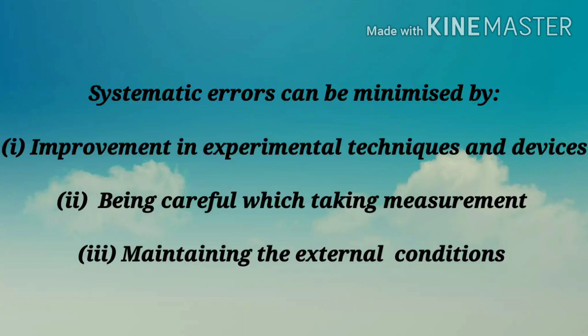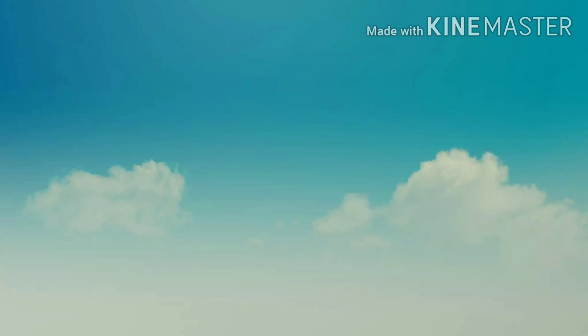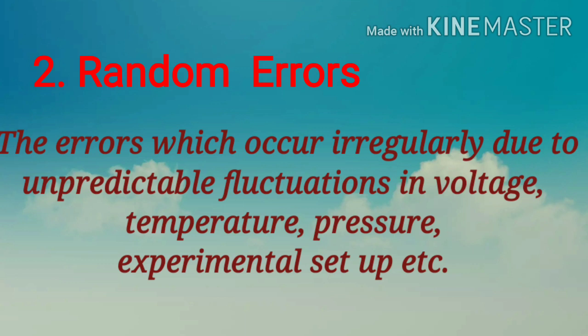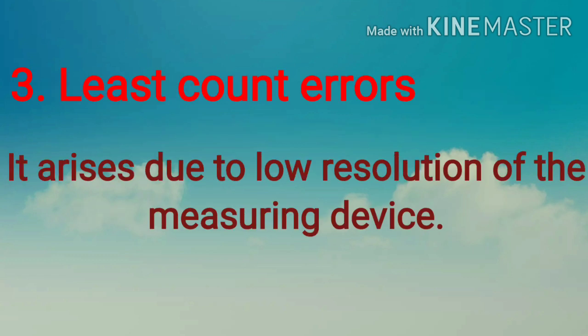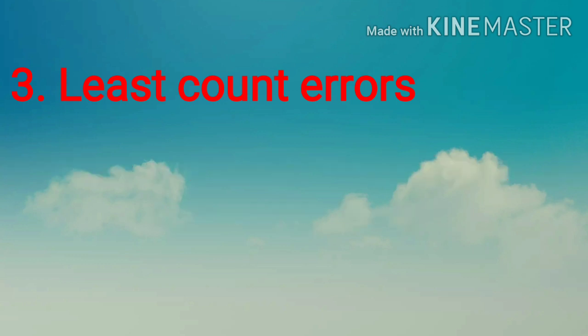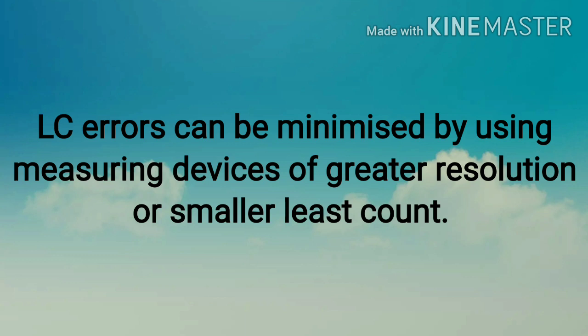Systematic errors can be minimized by improvement in experimental technique and devices, being careful while taking measurements, and maintaining the external conditions. The second type — random errors — occur irregularly due to unpredictable fluctuations in voltage, temperature, pressure, etc. These can be minimized by taking a number of readings and calculating the mean value. The third type — least count errors — arise due to low resolution of the measuring device and can be minimized by using devices of greater resolution or smaller least count.